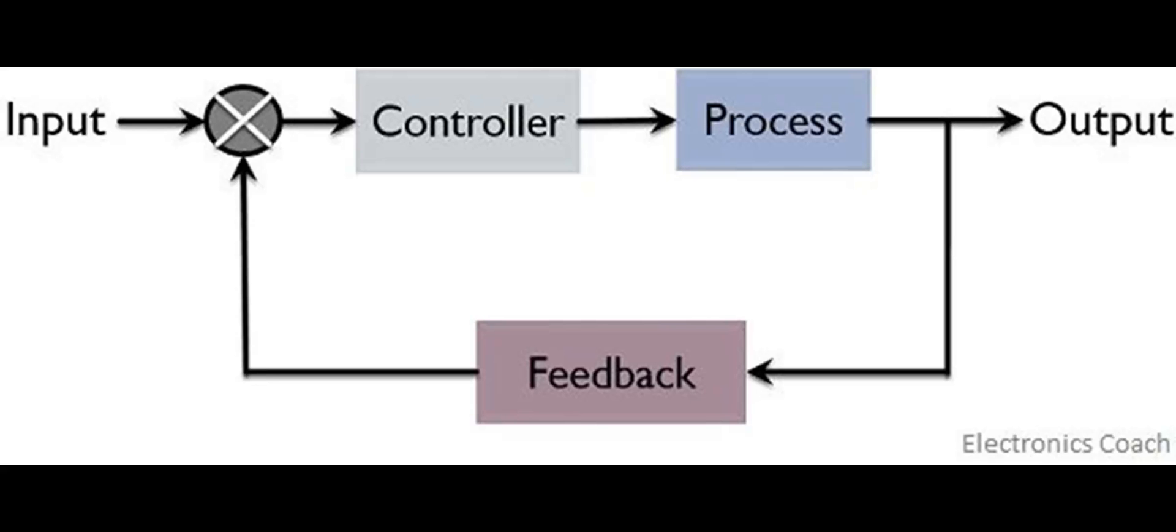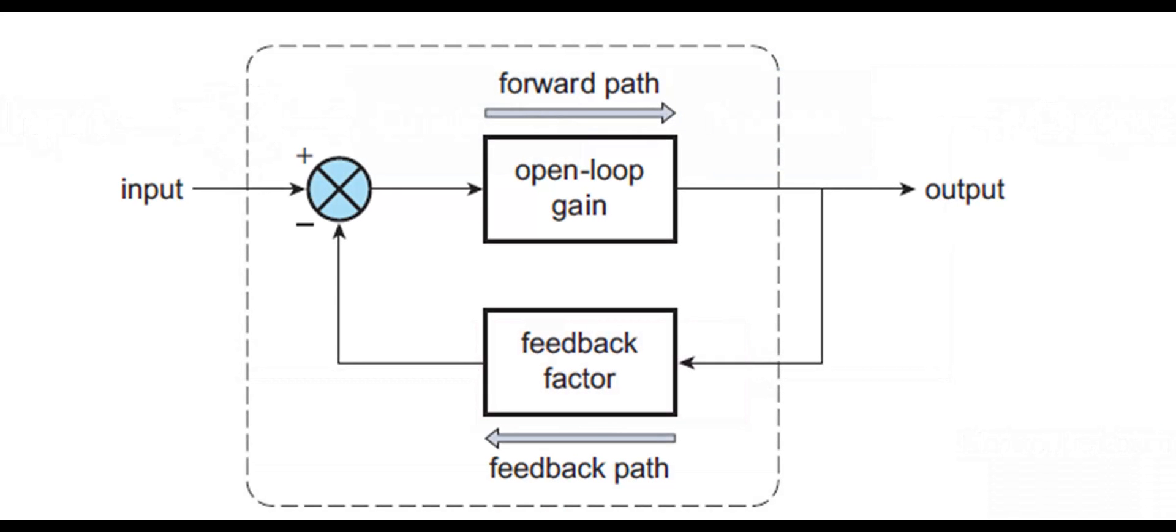It thus closes the loop around the process from the sensing actuation by feeding the end result back to the sensors. So closed loops are also referred to as feedback loops. By using feedback, it is possible to build circuits with accurately defined gains and other parameters.